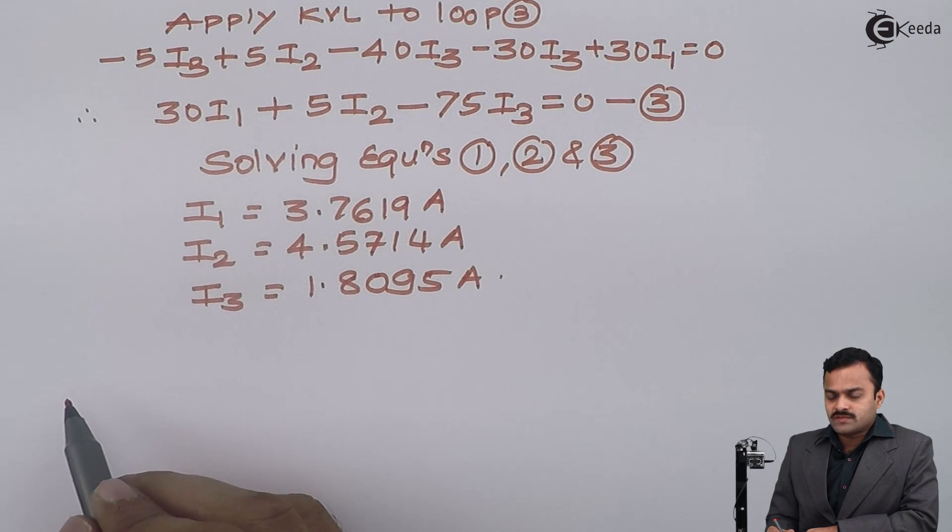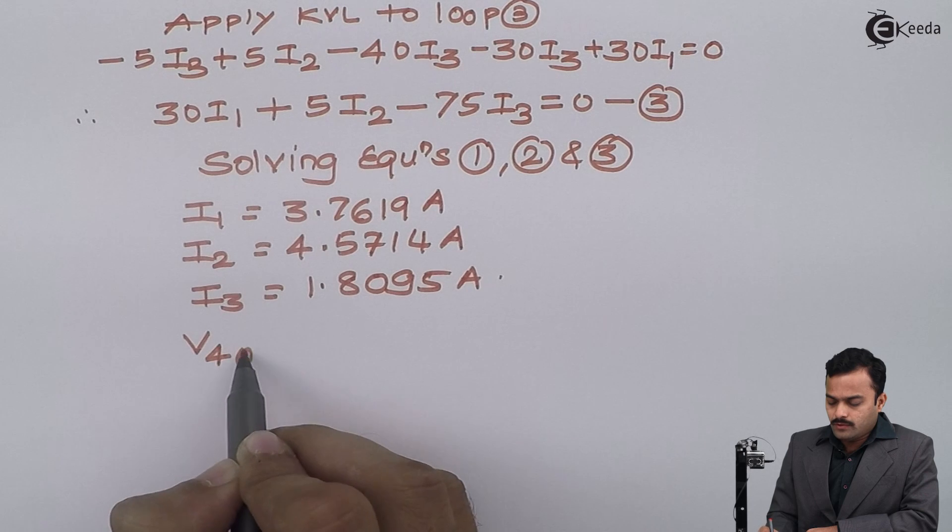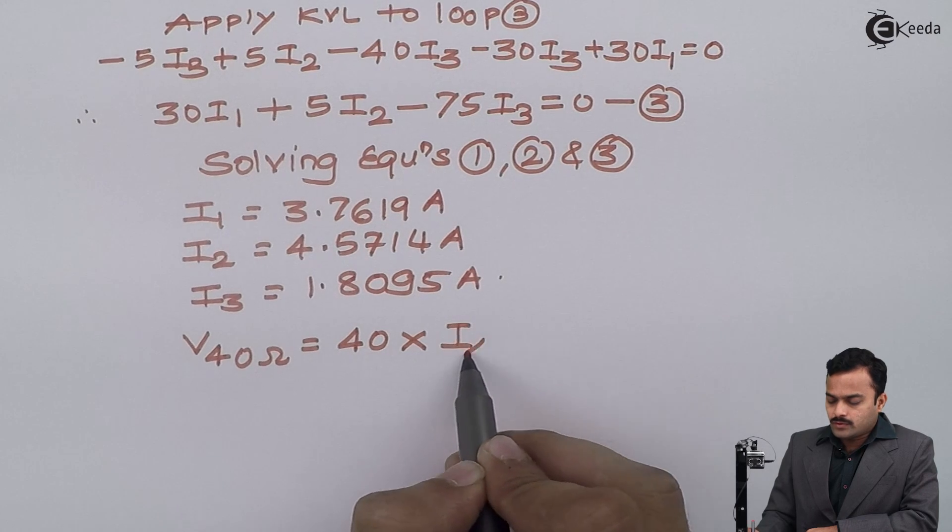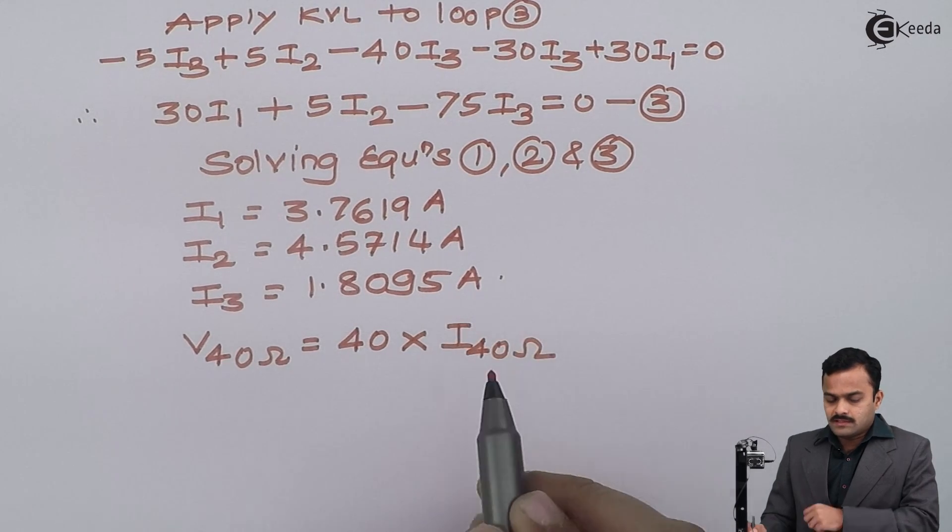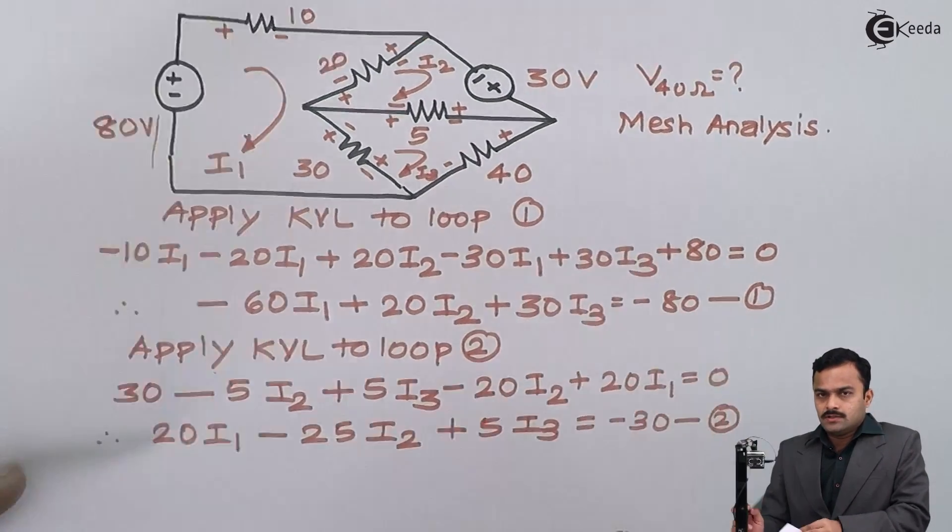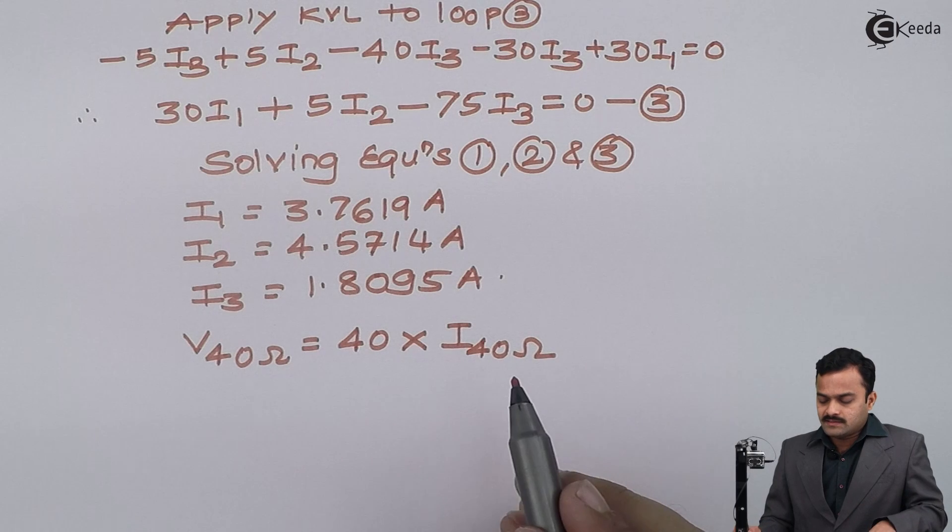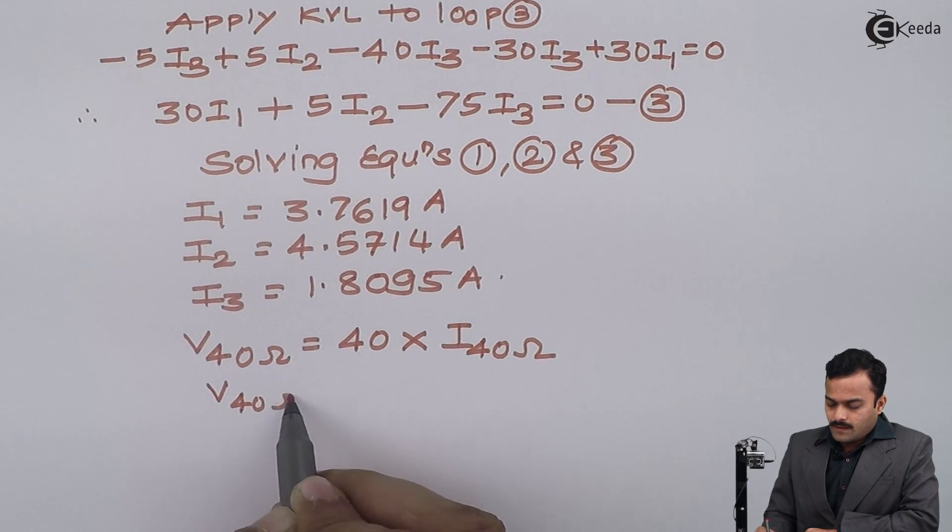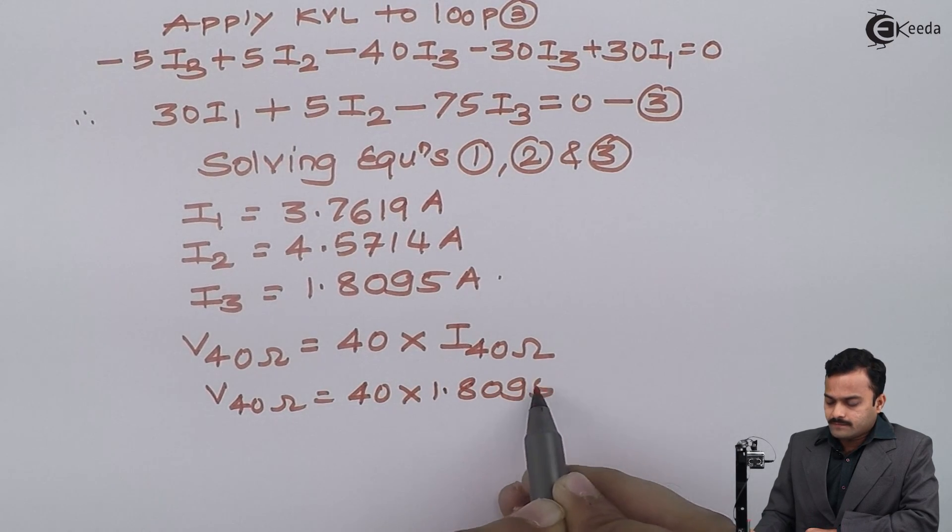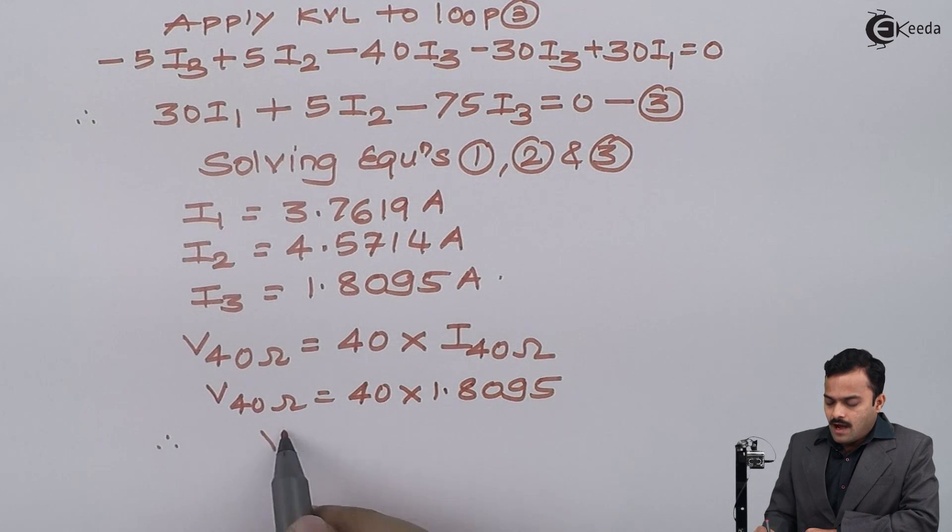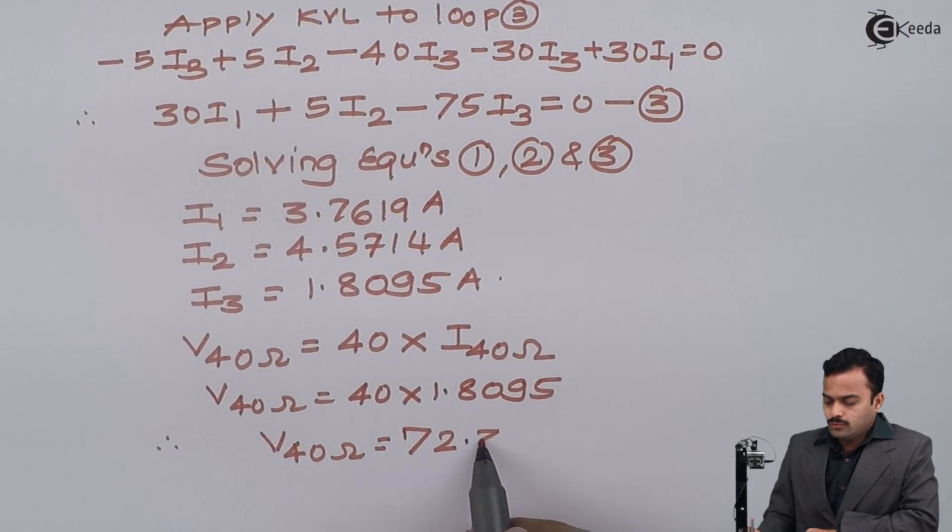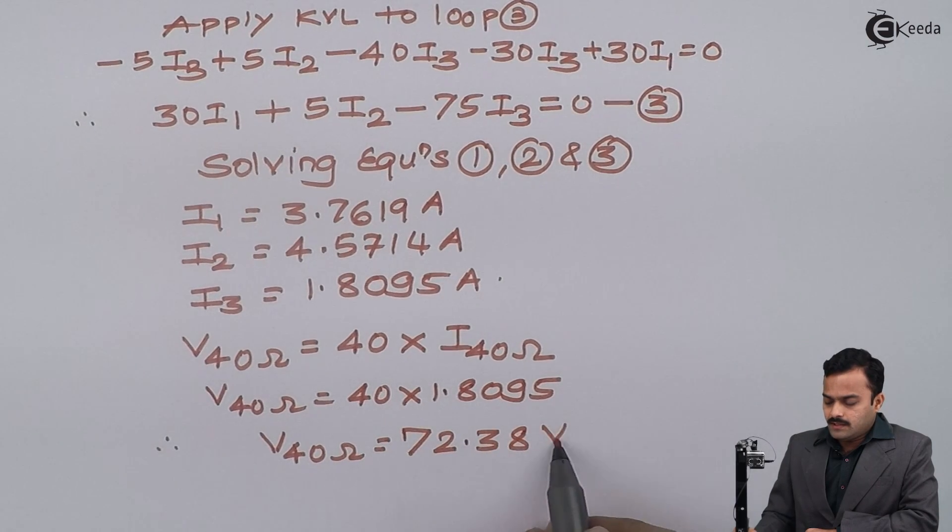In the problem, they have asked what is the voltage drop across 40 ohms. So voltage drop across 40 ohms is given as 40 ohm resistance multiplied by current flowing through the 40 ohm resistance. If you see the circuit, current flowing through the 40 ohm resistance is I3 only, so ultimately V40 ohm is nothing but 40 times I3, which is 1.8095. After solving this, voltage across 40 ohms I will get 72.38 volts.